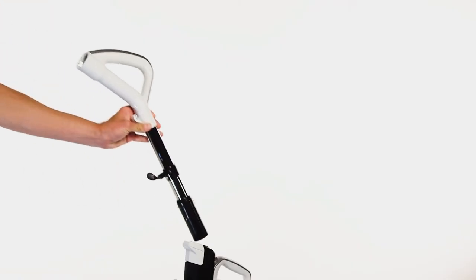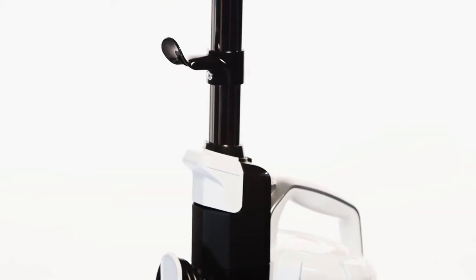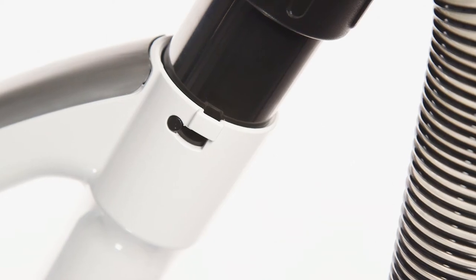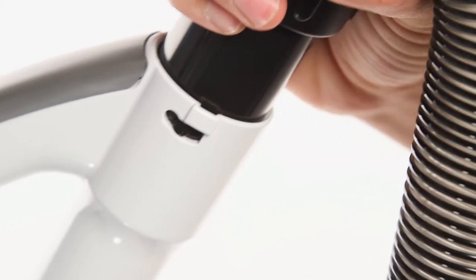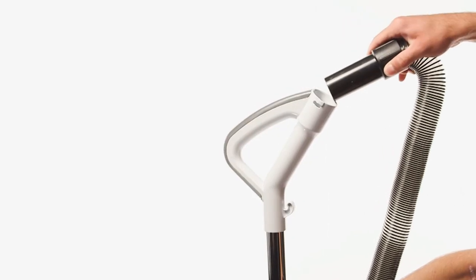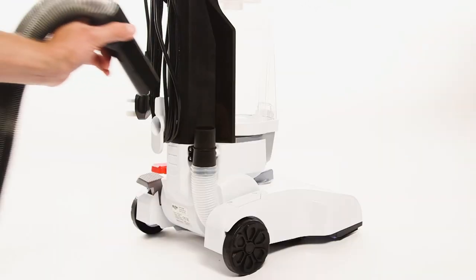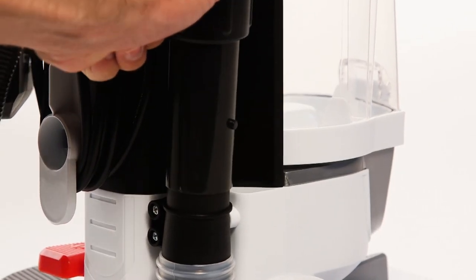To use the floor head, remove the accessories and slot the handle. Then push the hose into the hose inlet.